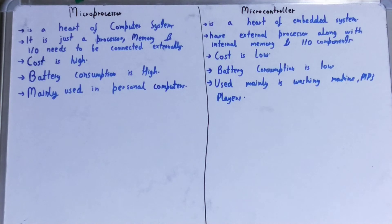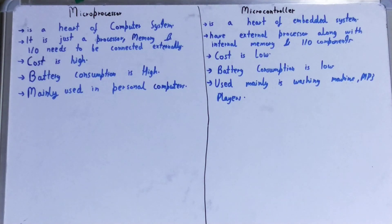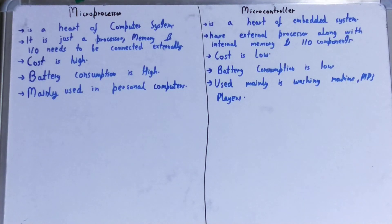Next, battery consumption of a microprocessor is high. A microprocessor does multiple tasks at the same time — for example, a call is coming in while you are surfing Facebook or using WhatsApp — so battery consumption is high. Whereas a microcontroller has low battery consumption because embedded systems are generally battery-powered. If battery consumption were high it would be a problem, since you can't change the battery again and again. Microprocessors are used in computer systems where AC current is available, so battery consumption is less of a concern there.